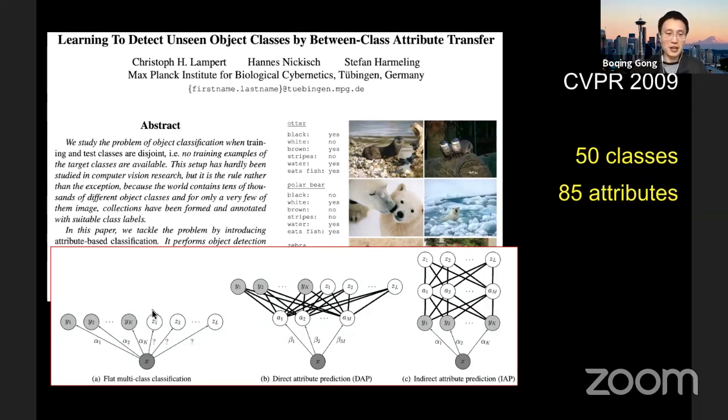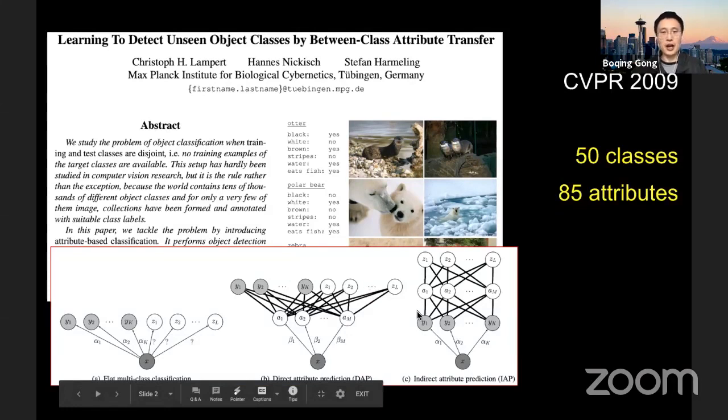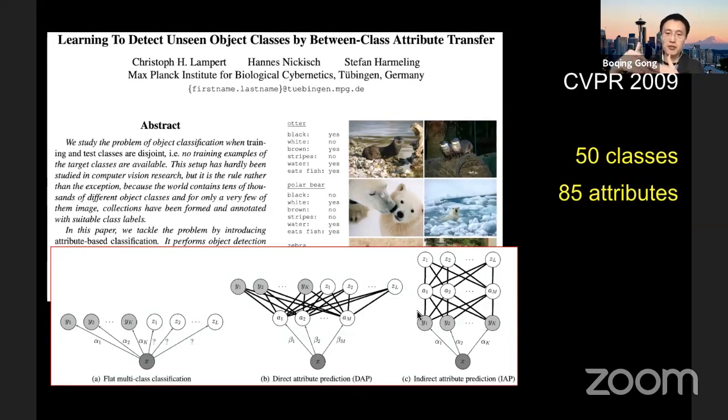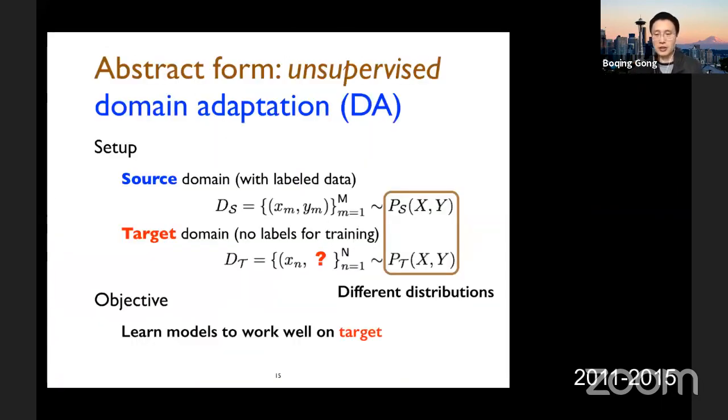It became one of my favorite papers at that moment. So it has a nice graphical model here to show how to use entry builds to recognize objects, even if you haven't seen them before. I have about 50 classes in their paper. I really love this combination, very neat combination between machine learning and computer vision.